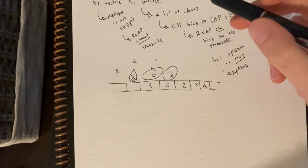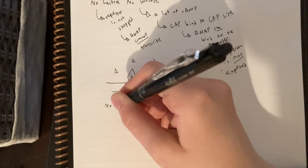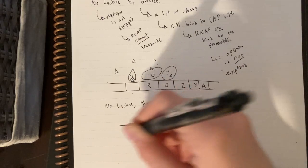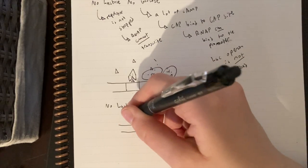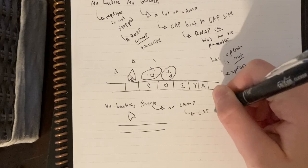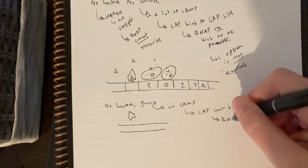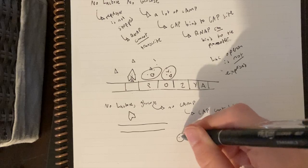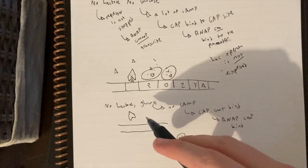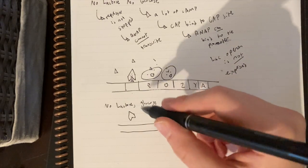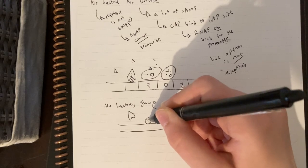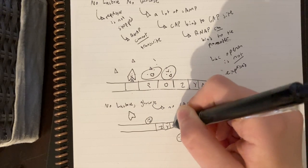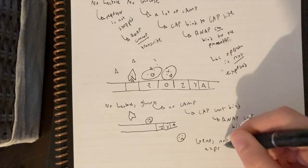Second scenario: no lactose and glucose present. This is even worse — there's no cyclic AMP, so CAP can't bind, so RNAP can't bind to the DNA. And because there's no lactose, the repressor is also bound to the operator. Basically everything is preventing expression, and the lac operon genes cannot be expressed.